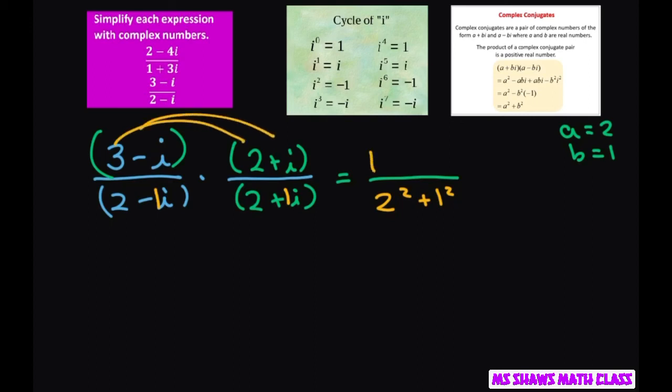The numerator, we'll just FOIL that out, so you get 6 plus 3i minus 2i minus i squared.